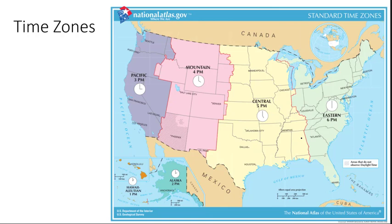We have six main time zones in the United States. First, Hawaii time — Hawaii is really far west. Here's California, and Hawaii is way off to the side on the map; we put it down here because there's not enough room. So Hawaii is way off to the side, which is as far west as everything gets for the U.S.